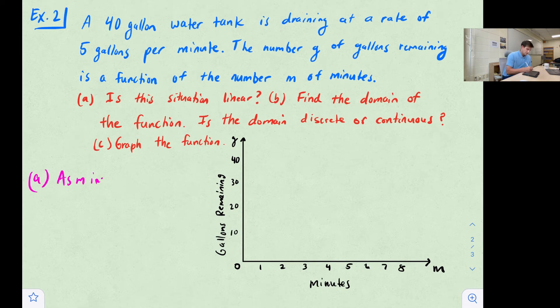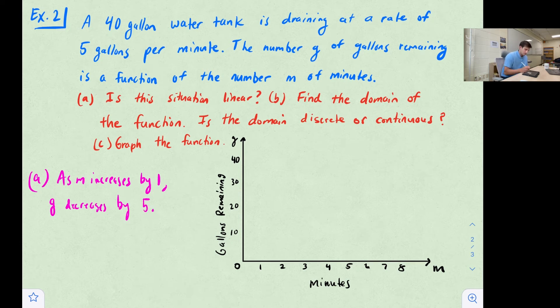So we could say for part A, as M, as our minutes increase by one, so as M increases by one, G, which is our gallons remaining, decreases by five. So 5 gallons per minute. So yes, that's constant, and so we would say yes, that is linear.